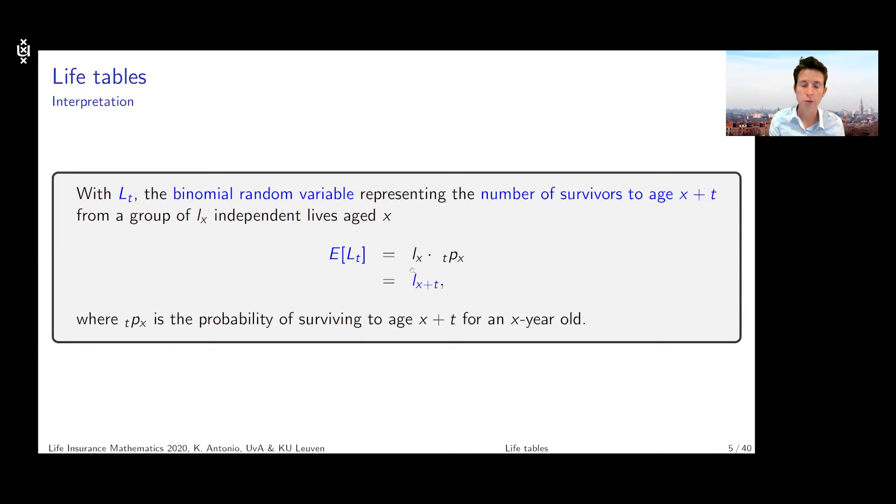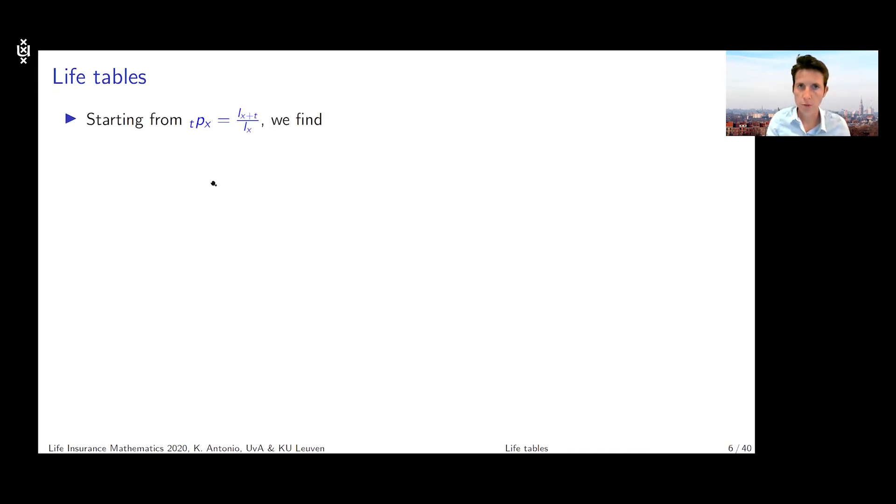If I have access to the lx column in my life table, I can calculate tpx by taking the ratio of lx plus t and lx. If I start from this expression tpx, I can look into my life table, grab lx plus t, and divide it by lx. If I want to re-express the mortality rate q30, I can make the reflection that q30 is the complement of p30.